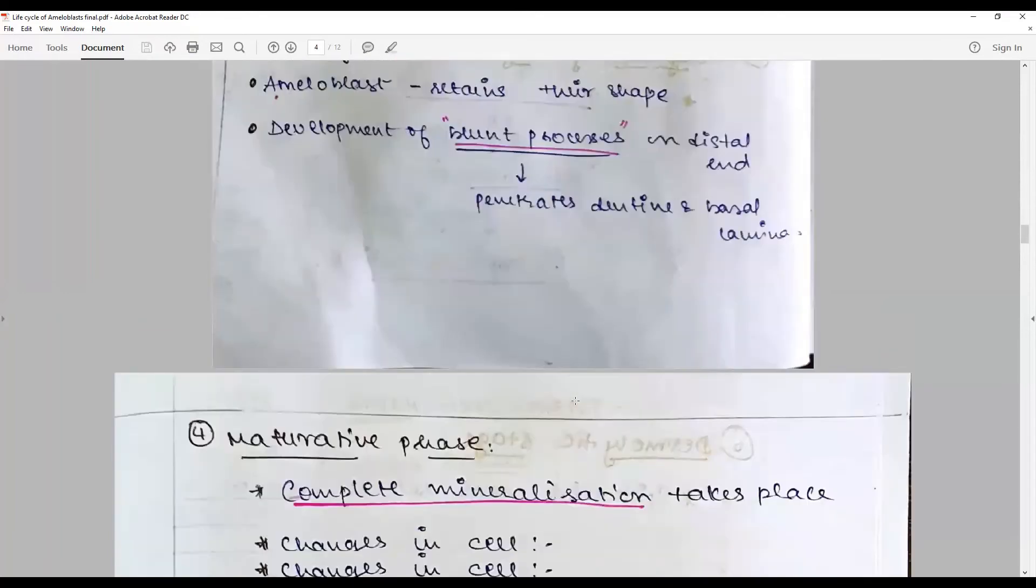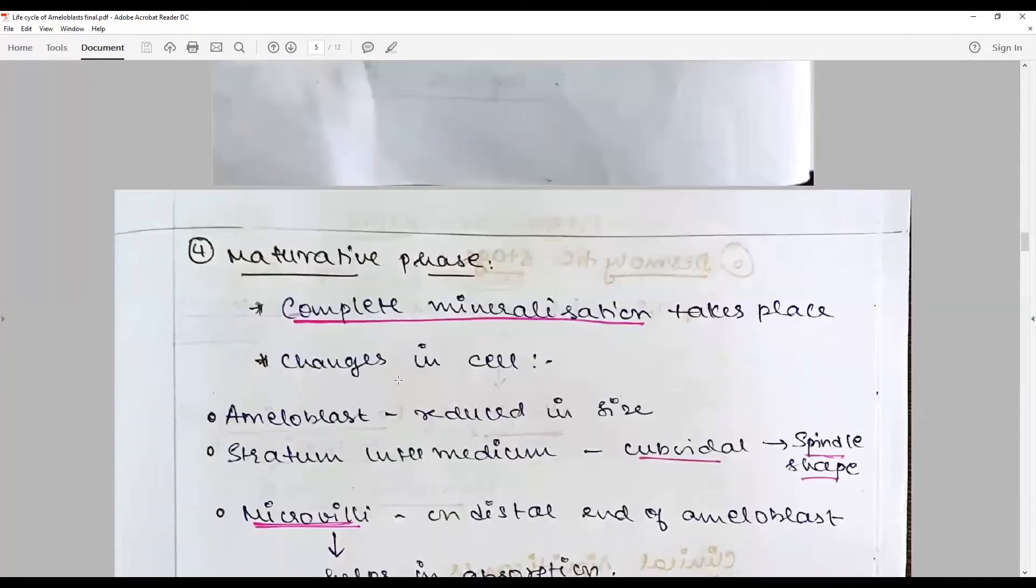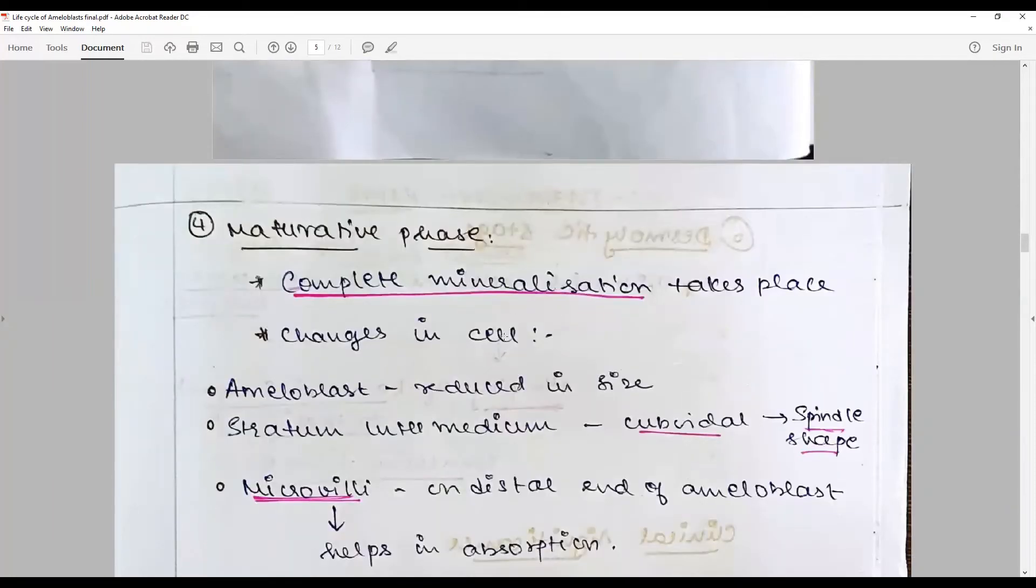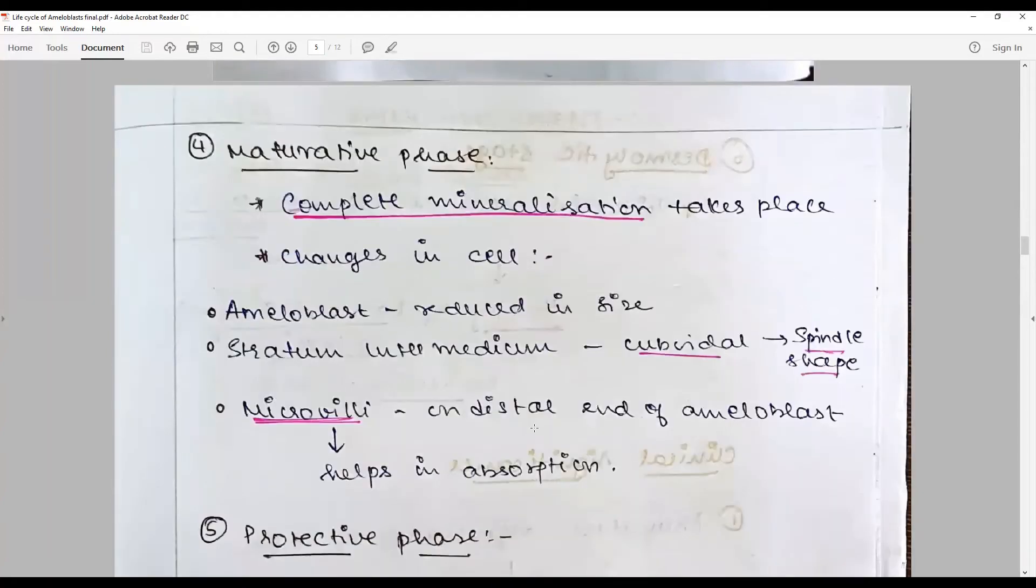Maturative phase: this phase mineralization takes place. The changes in cell—because it is post-functional, ameloblast reduces its size and stellate reticulum and stratum intermedium collapses. They become less cuboidal from the star shape to spindle shape. Microvilli on distal end of ameloblast helps in absorption.